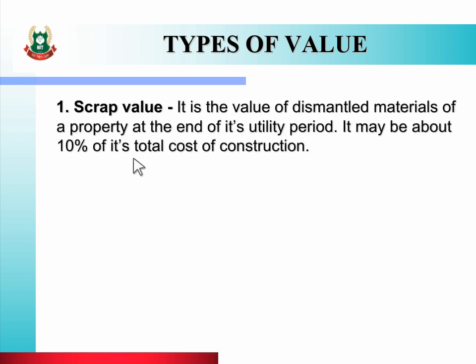First, let us see what is meant by scrap value. It is the value of dismantled materials of a property at the end of its utility period. It may be about 10% of its total cost of construction. Scrap का मतलब होता है dismantle material — हर building का utility period रहता है, इस utility period के बाद building को dismantle करने के बाद जो materials रहते हैं उनकी जो किम्मत रहती है उसे scrap value कहते हैं। यह scrap value cost of construction के 10% रहती है।